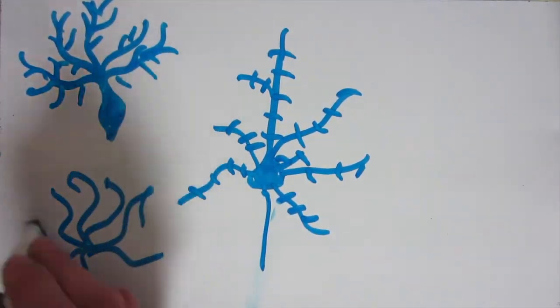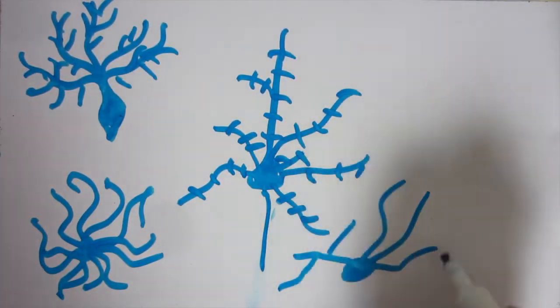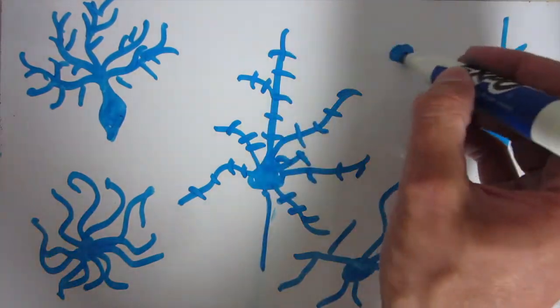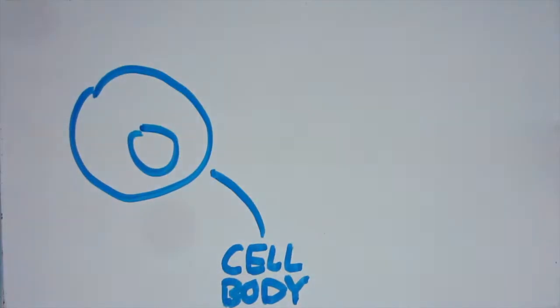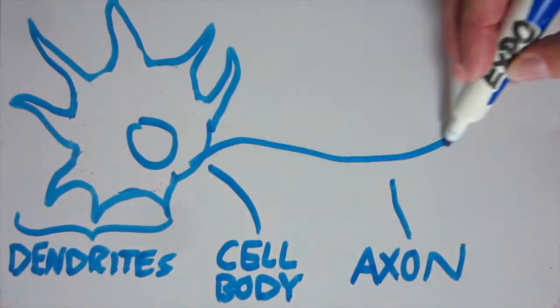Neurons are cells with special electrical properties, and they're responsible for all the moving, feeling, and thinking you do. They come in many shapes and sizes, but in general they've got a main body, a bunch of dendrites, and one axon.